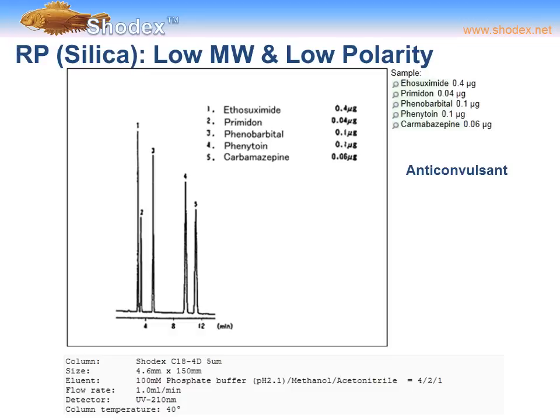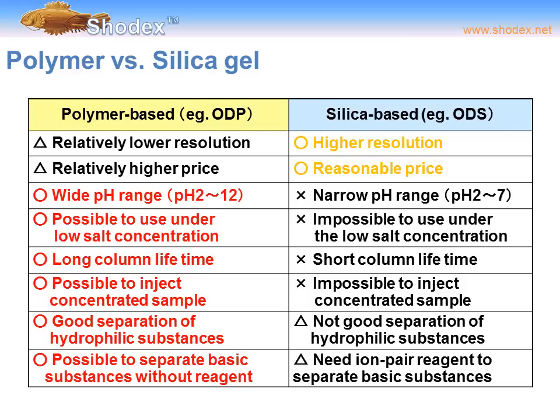In another example, we accomplish a separation of anticonvulsants including phenobarbital, phenytoin, and primidone, using a C18 4D 5-micron particle size column, 4.6 × 150 mm. The eluent is a 100 mM phosphate buffer at pH 2.1 along with methanol and acetonitrile at a ratio of 4:2:1. Flow rate 1 mL/min, UV detector, column temperature 40°C.